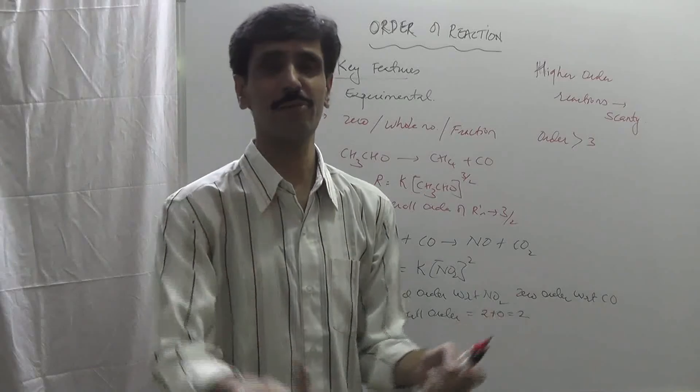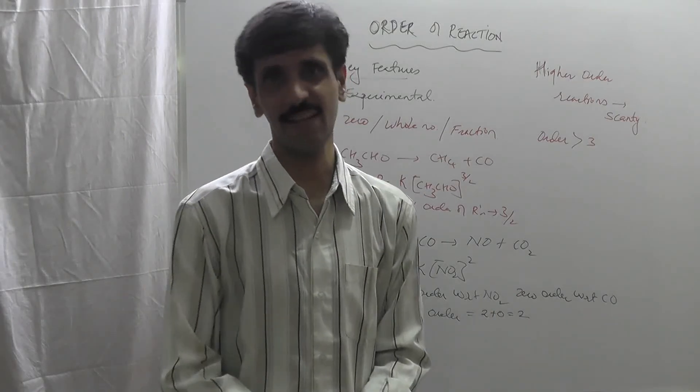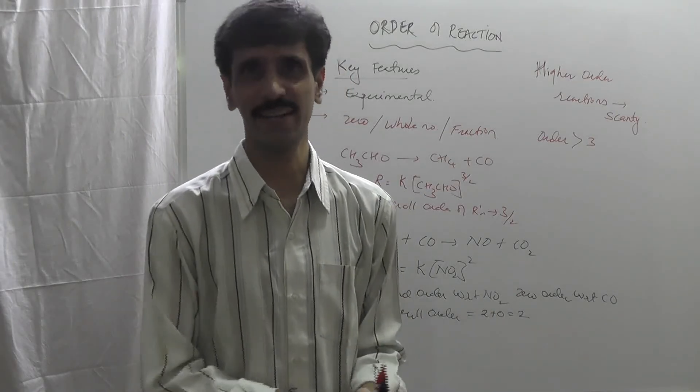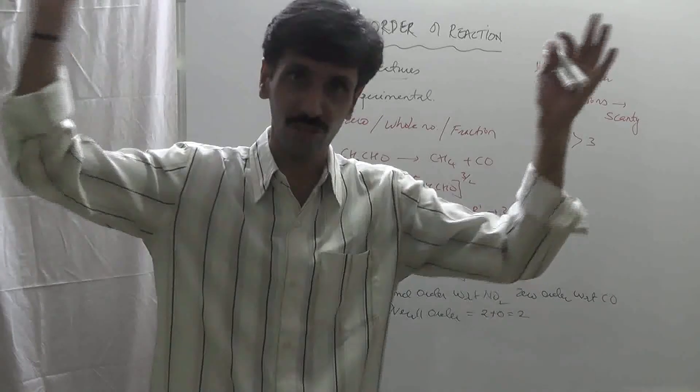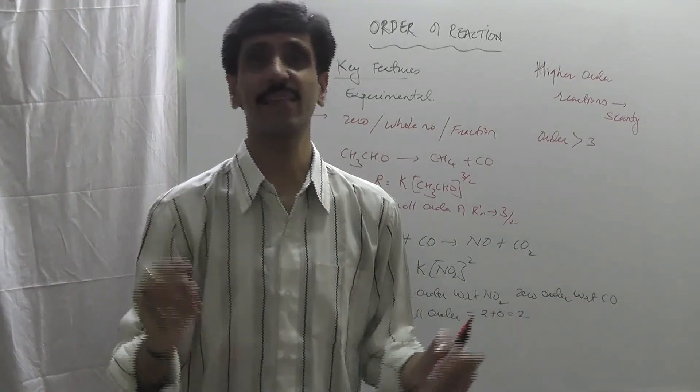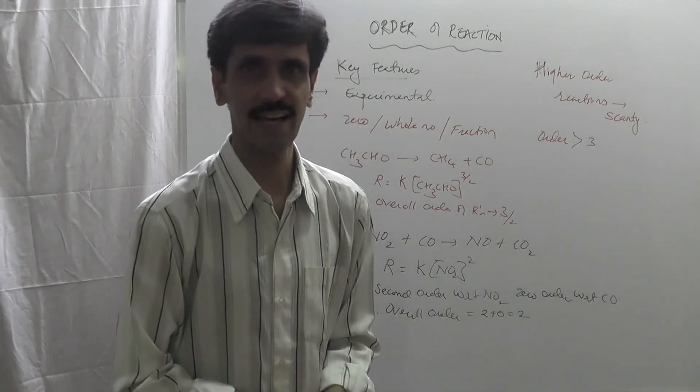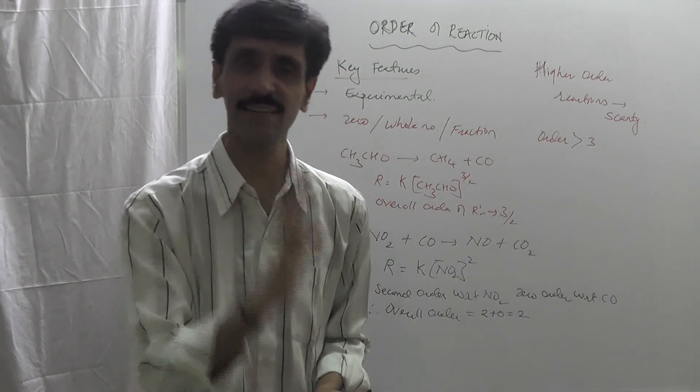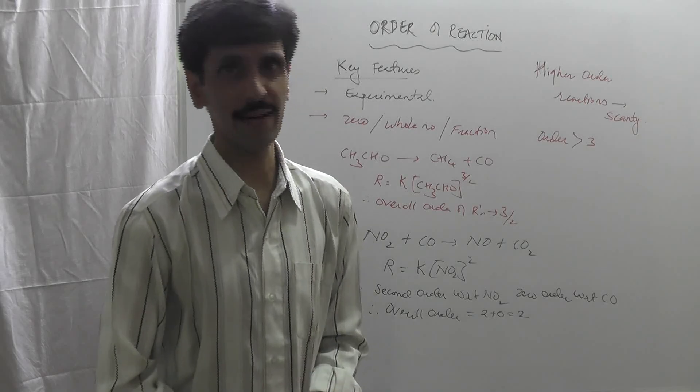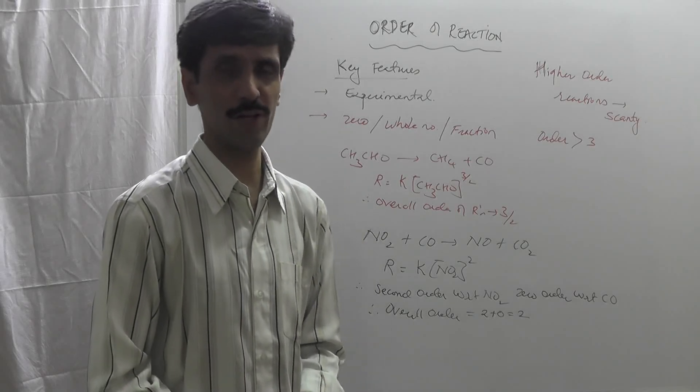So we normally have a first order reaction, we have a second order reaction, at the most we have the third order reaction. But the fourth order, fifth order, sixth order reactions - the chances are very very less. So I guess the concept with respect to the order of the reaction is very clear to all of you. Thank you.